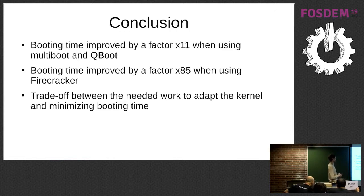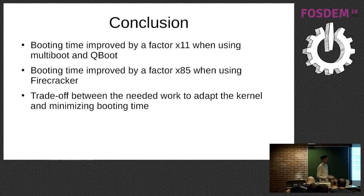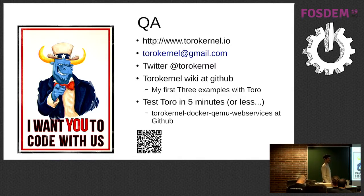So to conclude: what I get is that when we use a solution that is a combination between a multiboot kernel and QEMU with an optimized framework, you see an improvement over my current bootloader of a factor of 11 — I agree my old bootloader was a bit crap, but still. Then we have a factor of 85% improvement when we try Firecracker. My impression is that the choice of one solution over another is just a trade-off between the work needed to adapt the kernel to that solution and the resulting booting time we want to achieve.